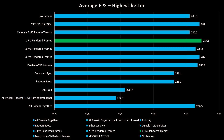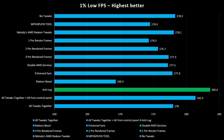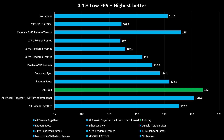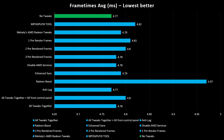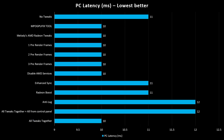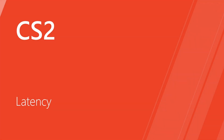In Fortnite, the best average FPS was with 1 pre-render frame only, without changing anything else. In 1% lows there was a much better result with anti-lag, and we can see a huge FPS boost. The same for 0.1% lows — a very good improvement in FPS. Adaptive sync deviation was again better with anti-lag. Frame times were better with no tweaks, by default without changing anything. For PC latency, 'All tweaks together' was the best, along with some other options as we can see. Using all options together added 2ms more PC latency.